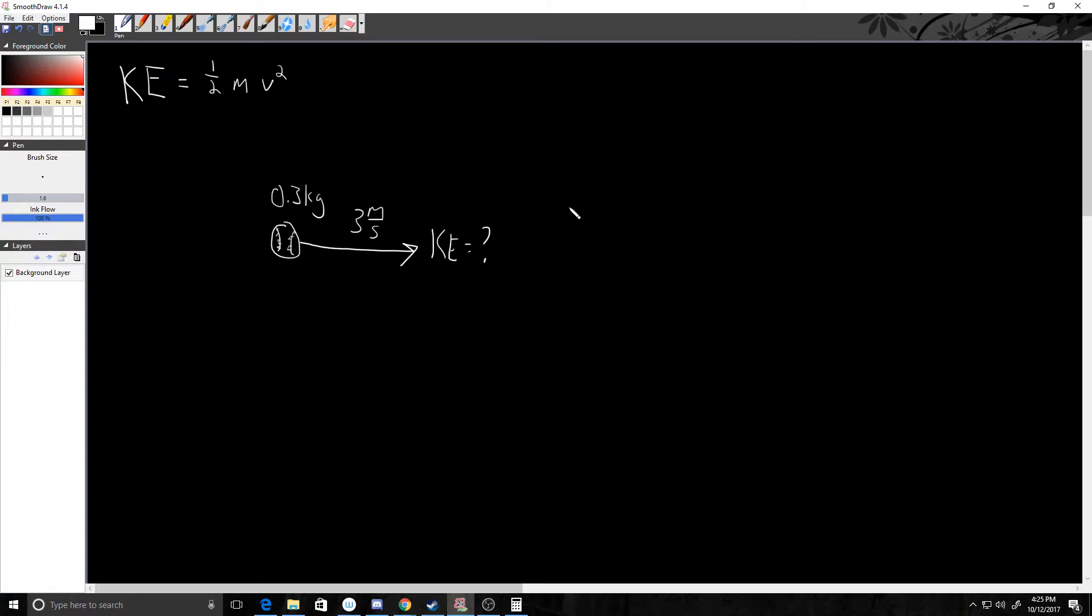So if I want to know the kinetic energy, so once again, it's one-half mv squared. So in this case, one-half is 0.5. The mass we said was 0.3 kilograms. And the velocity we said was 3 meters per second. And I need to square that.